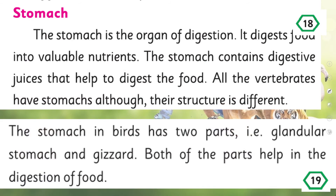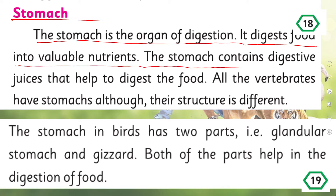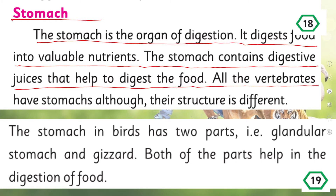Now on page number 18, let's talk about the stomach. The stomach is the organ of digestion — it digests food into valuable nutrients. The stomach contains digestive juices that help to digest the food. All vertebrates have a stomach, although their structure is different. When you chew food and swallow it, it goes to the stomach where different juices digest it.